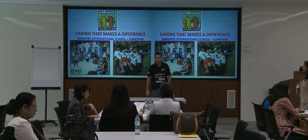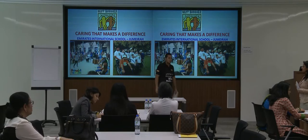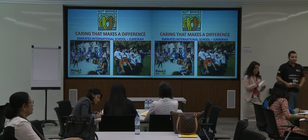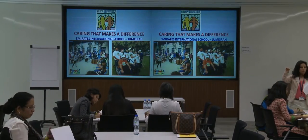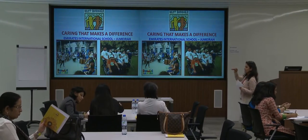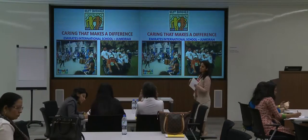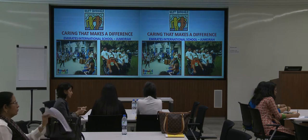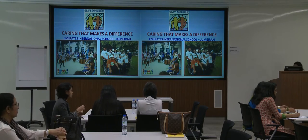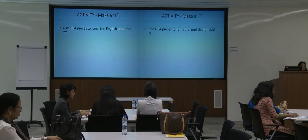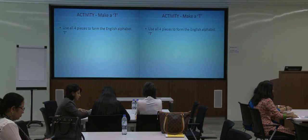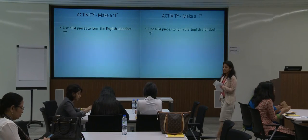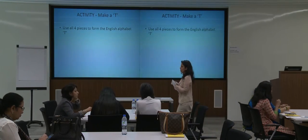Welcome to this session presented by Dr. Rose Campbell. If you see an envelope on the table, you will find four pieces inside. You have to form the letter T — the English alphabet letter T — using all four pieces.